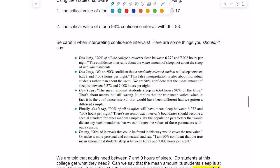Don't say the mean amount of students sleep is between 6.64 hours 90% of the time. That's not true. It's about means but it's still wrong. It implies the true mean varies when in fact it's the confidence interval that would have been different had we gotten a different sample, and we've discussed that that's all due to natural sampling variation.